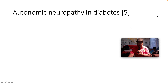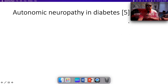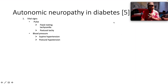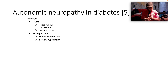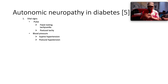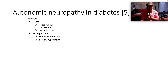Now there are a whole truckload of autonomic neuropathies in diabetes to speak about. In terms of vital signs, you can have a fixed resting tachycardia or postural tachycardia. In blood pressure, you can have supine hypertension or postural hypotension, which is defined by a drop in systolic of more than 20 mmHg or a drop in diastolic of more than 10 mmHg on moving from a seated to a standing position.